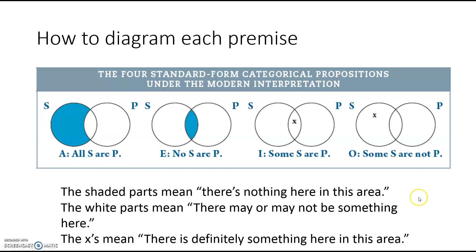Here's how you diagram each of the four standard form categorical propositions. If you want to diagram an A statement, all S are P, it looks like this. You draw two circles that overlap, and they represent the two class terms, the S's and the P's. The shaded part means there's nothing here in this area. White parts mean there may or may not be something here in this area. And if there's an X, that means there is definitely something here in this area. So let me explain. If we say all S are P, we've shaded all of the area of S that is not overlapping with P. What this is saying is there are no S's, there's no S stuff that is not part of the P stuff. If there are any S's, they are right here in the P overlap area.